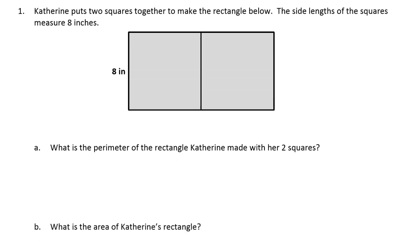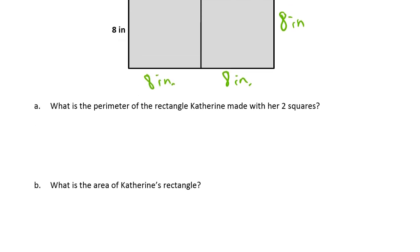Catherine puts two squares together to make the rectangle below. The side lengths of the squares measure eight inches. We've seen a lot of this lately. Squares put together to make rectangles. So let's see. These are eight. So I'm just going to put eights all over here. Before I even read the questions, I just know this will help me figure out whatever I have to figure out that's coming up.